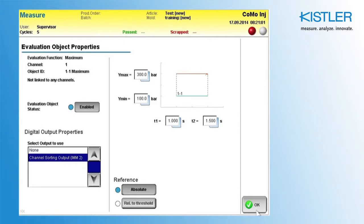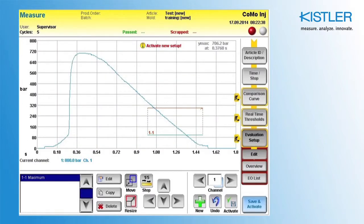Confirm to return to the menu Evaluation Objects Properties. Now you can position the evaluation object exactly where you want it. Here you can see the curve from the last cycle. You can now slide the evaluation object to the maximum, because its purpose is to monitor the maximum of the curve.